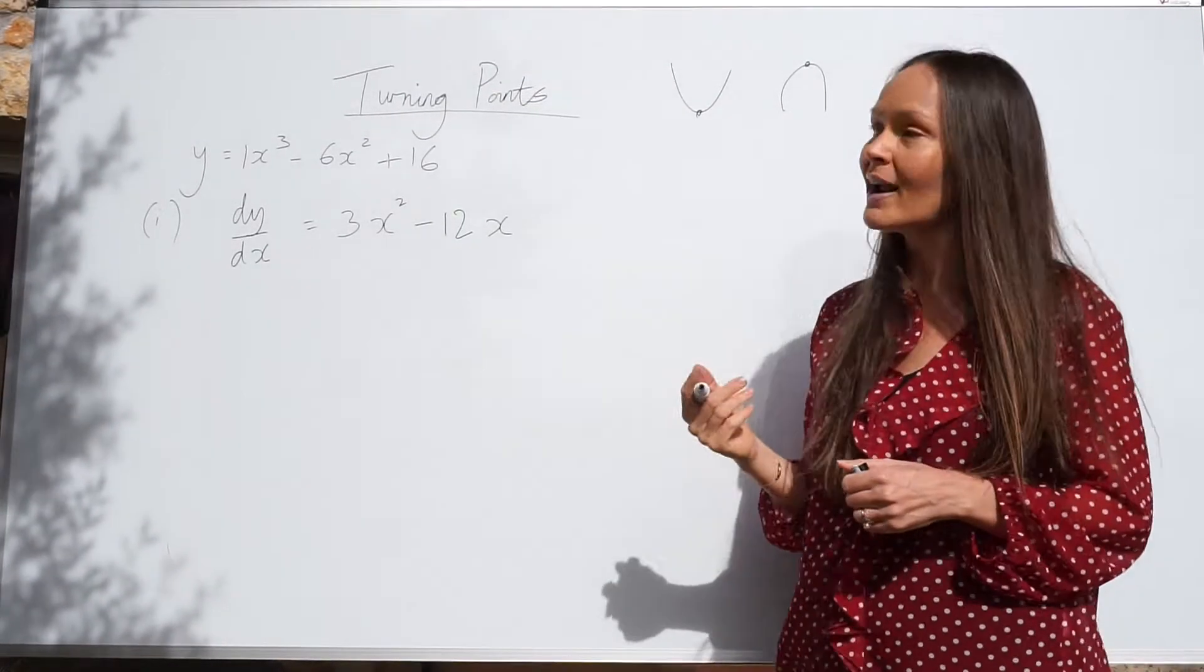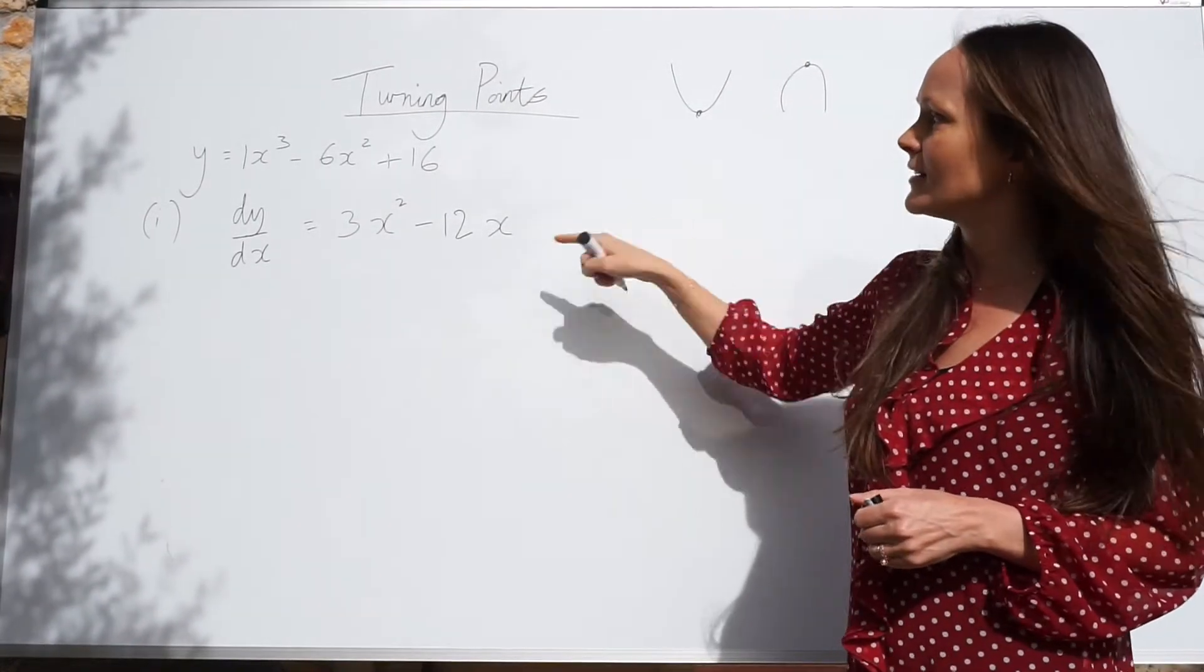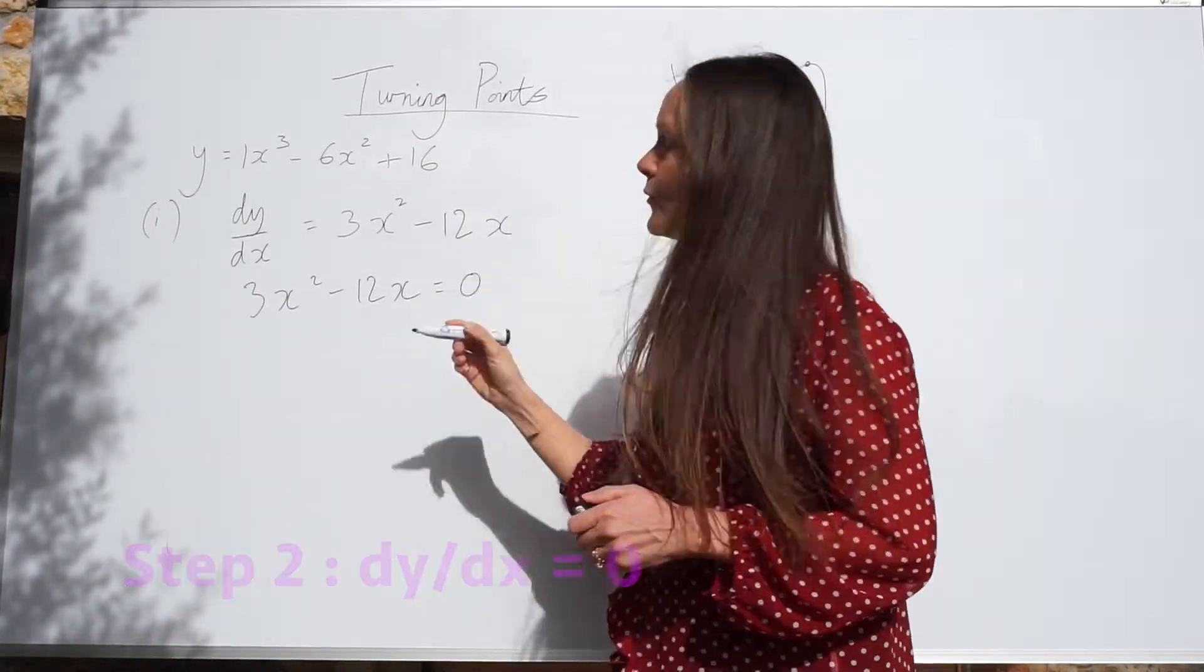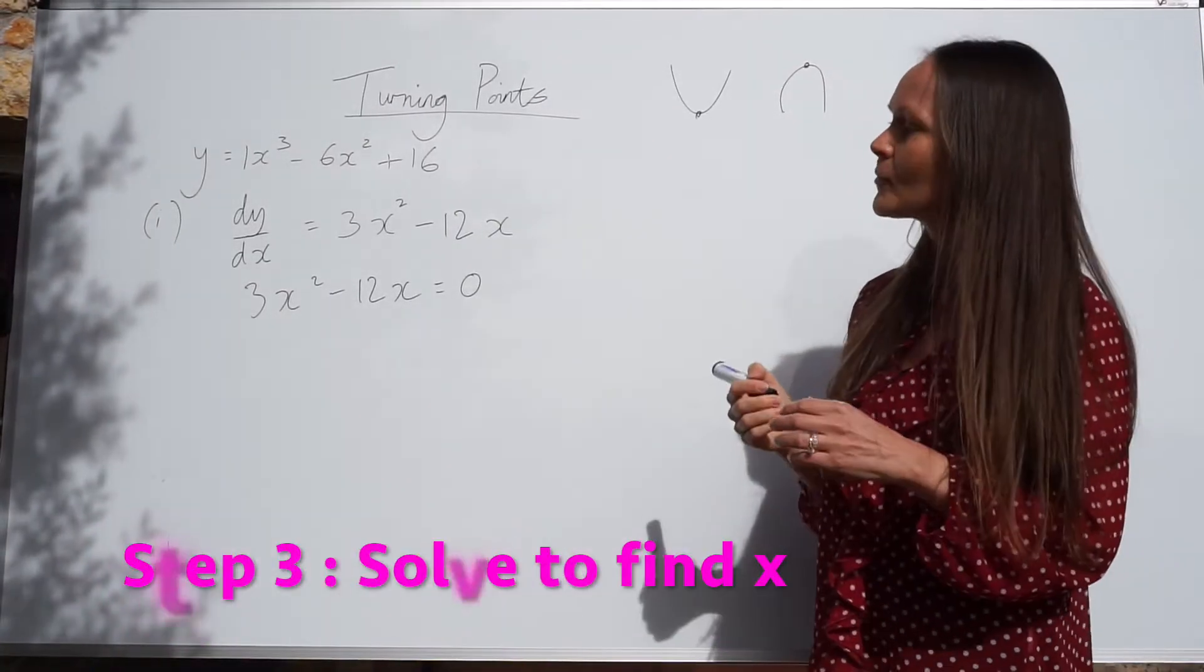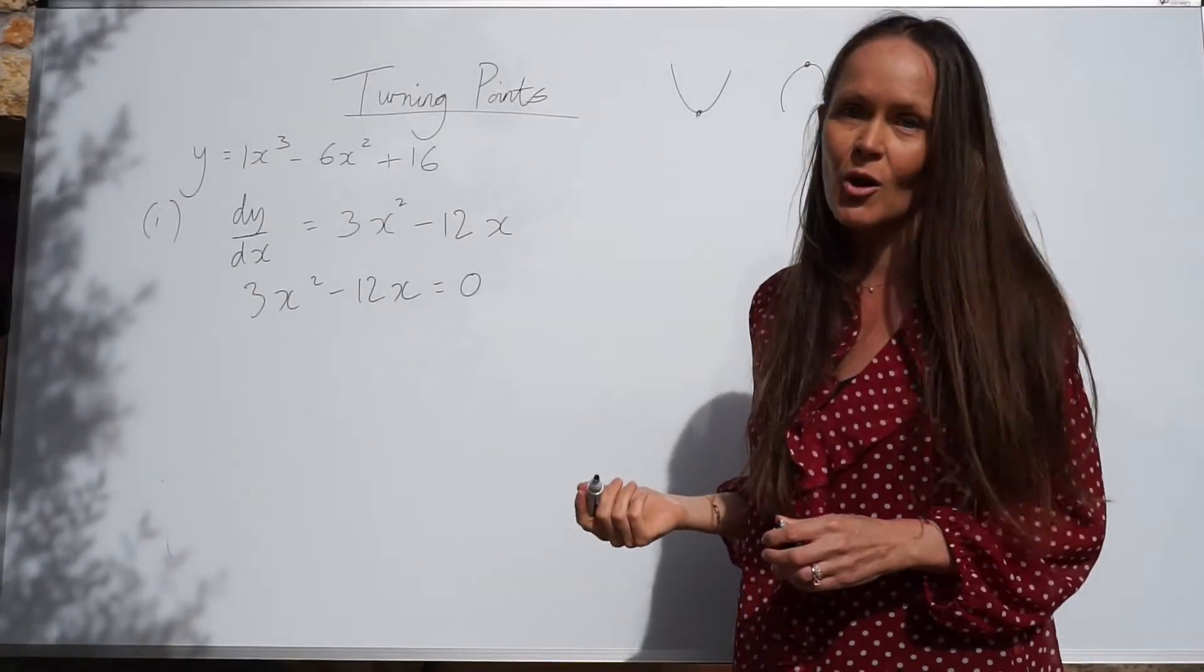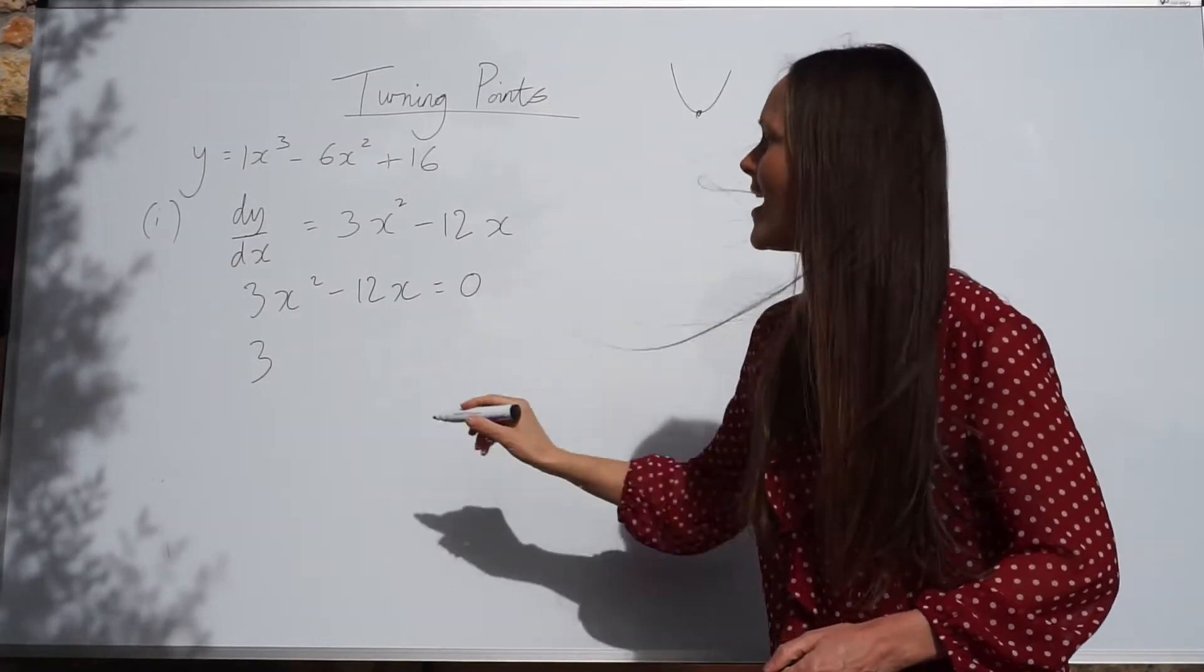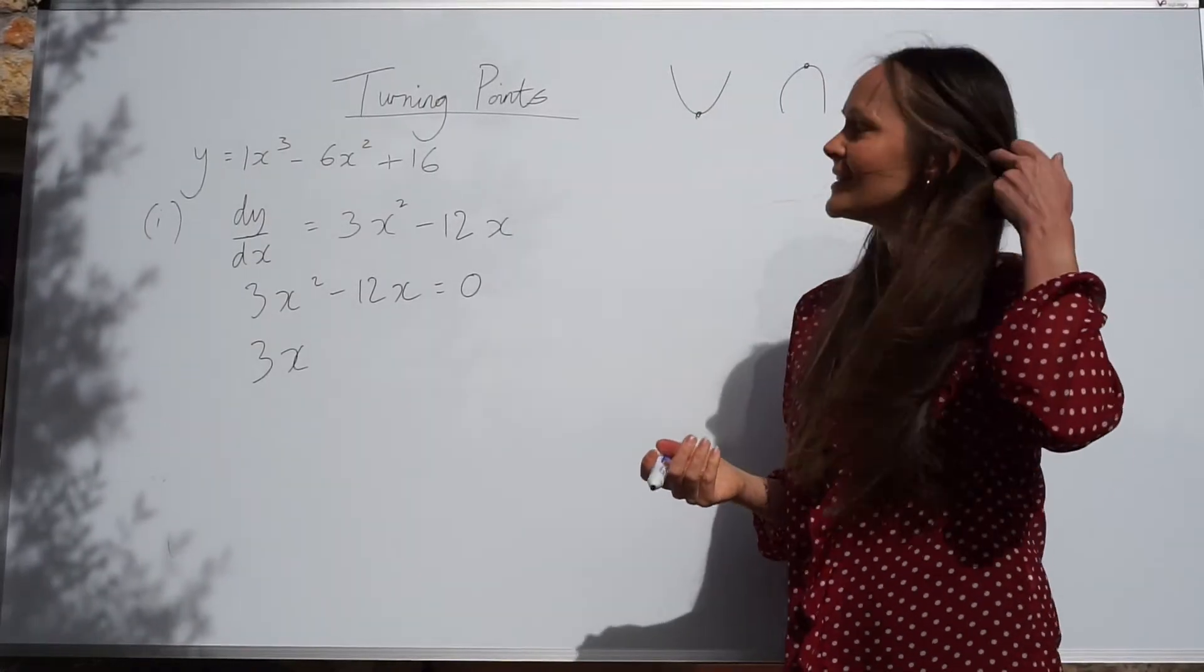Remember I said the gradient is always 0. So we need to put this expression for the gradient equal to 0. And then we need to solve the equation. So there's more than one way of solving. I'm going to solve by factorising. So I need to look for the highest common factors in these two terms. So 3 is the highest common factor in 3 and 12.